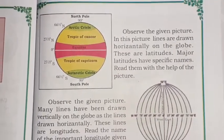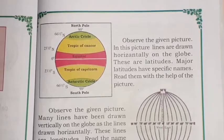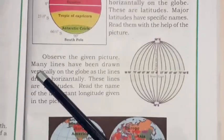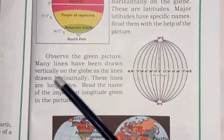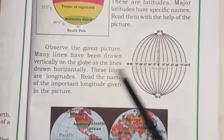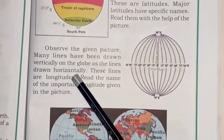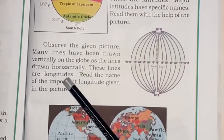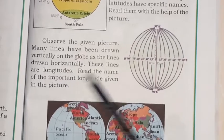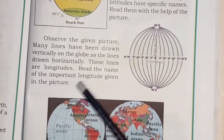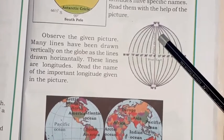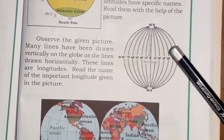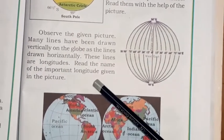Many lines have also been drawn vertically on the globe. These vertical lines are called longitudes. Read the names of the important longitudes given in the picture — for example, the Prime Meridian. These are the longitudes.